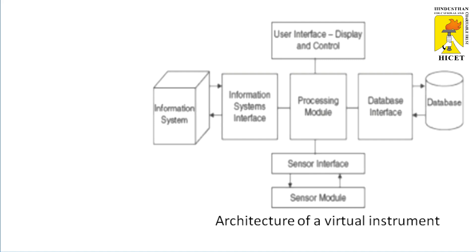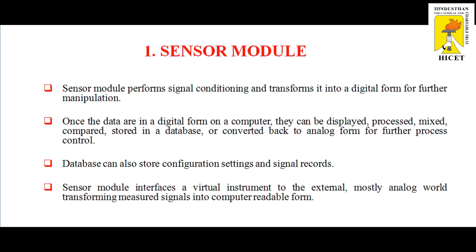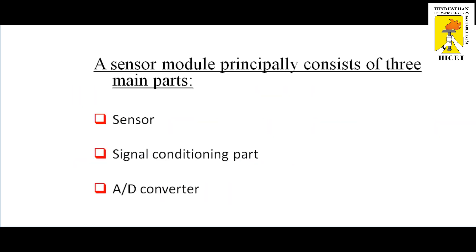First, we will see about the sensor module. The sensor module performs signal conditioning and transforms it into a digital form for further manipulation. Once the data are in digital form on a computer, they can be displayed, processed, mixed, compacted, stored in a database, or converted back to an analog form for further process control. The database can also store configuration settings and signal records. The sensor module interfaces a virtual instrument to the external, mostly analog world, transforming measured signals into computer-readable form. A sensor module principally consists of three main parts: the sensor, the signal conditioning part, and the analog to digital converter.